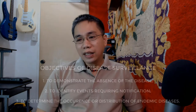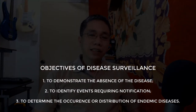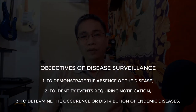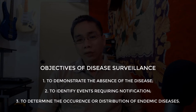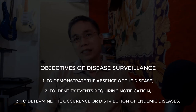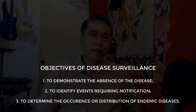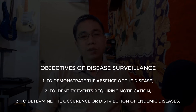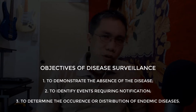Sadly, you can only lower the occurrence of disease — we cannot totally eradicate it. The objectives of disease surveillance can be one of the following: to demonstrate the absence of a disease; to identify events requiring notification, so you should know when you need to report; or to determine the occurrence or distribution of endemic diseases.